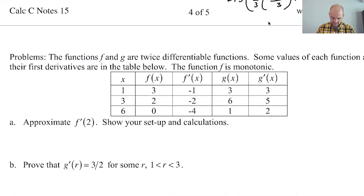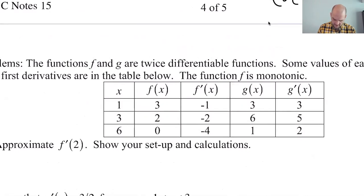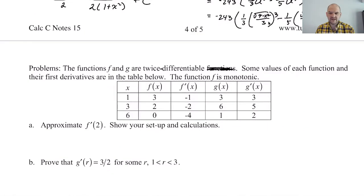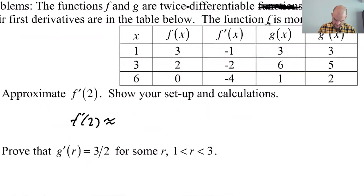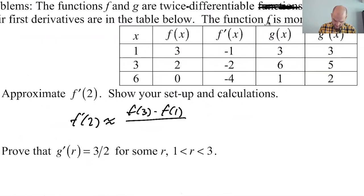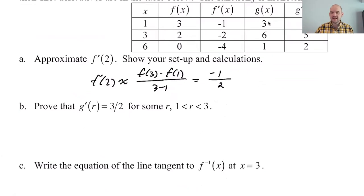The functions F and G are twice differentiable. Some values of each function and their first derivatives are in the table below. The function F is monotonic, but not G. To approximate F prime of two, we use a secant line: F'(2) ≈ (F(3) − F(1)) / (3 − 1) = (2 − 3) / 2 = −1/2, which is negative one and a half. You don't justify anything, no Mean Value Theorem — just the slope of a secant line.